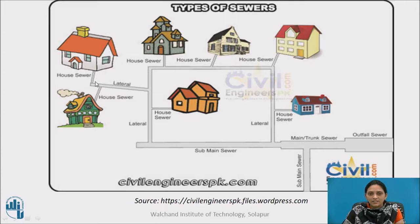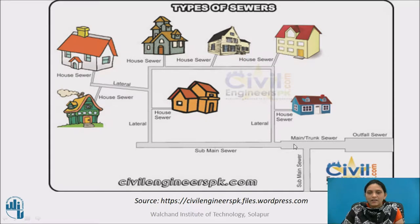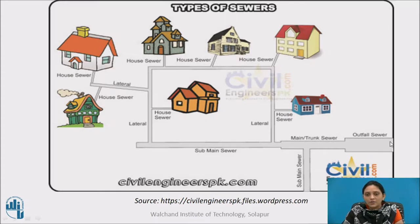This is the lateral sewer — all these are lateral sewers. The lateral sewer receives sewage directly from the house and is connected to the house sewer. Through the lateral sewer, sewage gets collected in the sub-main sewer, also called the branch sewer. Through the sub-main sewer, sewage is collected in the main sewer, also called the trunk sewer. Finally, all the sewage of the entire city is collected in the outfall sewer, which is a larger sewer that disposes sewage at the designated disposal point.